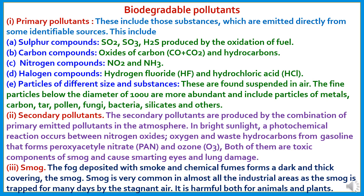Pollutants are further categorized into three types. The first is primary pollutants — substances emitted directly from identifiable sources. These include sulfur compounds like sulfur dioxide, sulfur trioxide, and hydrogen sulfide produced by the oxidation of fuel; carbon compounds like carbon monoxide, carbon dioxide, and hydrocarbons; nitrogenous compounds like nitrogen dioxide and ammonia; halogen compounds like hydrogen fluoride (HF) and hydrochloric acid; and particles of different sizes suspended in the air, including fine particles below 100 microns containing metal, carbon, tar, pollen, fungi, bacteria, and silicates.